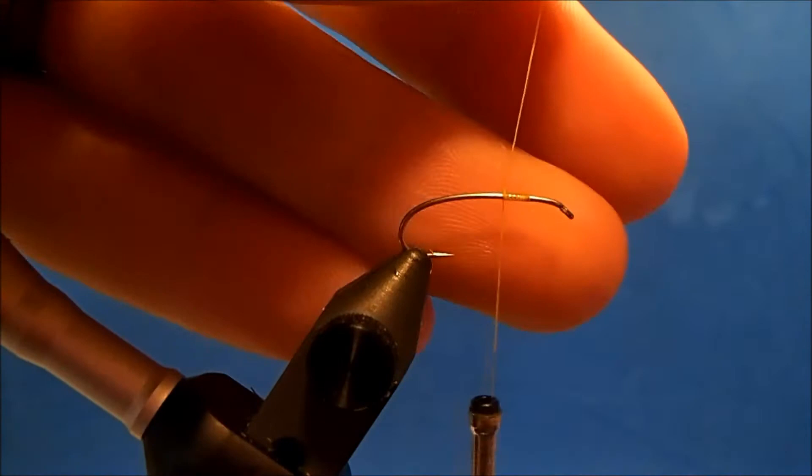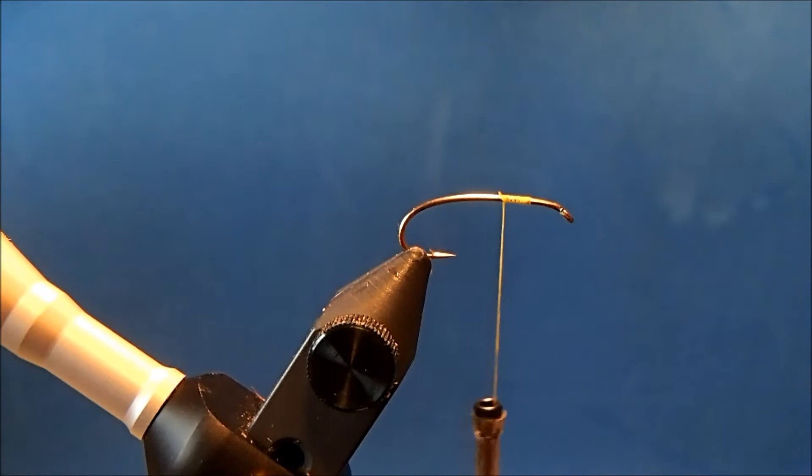I'll get this started at about the two-thirds point in the hook shank and that's going to serve as a visual indication of where I want the body of this pattern to stop and the head and collar to begin.